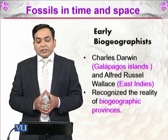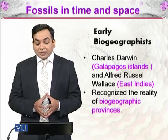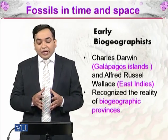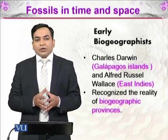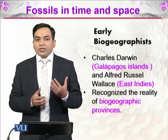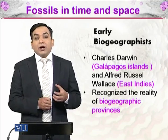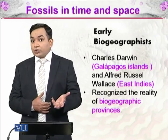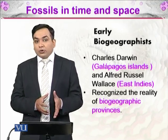Early biologists such as Charles Darwin, who visited the Galapagos Islands, and Alfred Russell Wallace, who studied the areas of East Indies, recognized the reality of biogeographic provinces — meaning there were areas of the earth which had their own distinct life. For example, kangaroos are present only in Australia. Marsupial mammals are present only in Australia and not in any other biogeographic province.